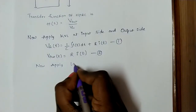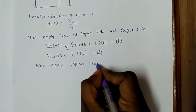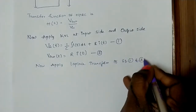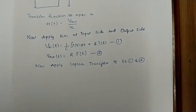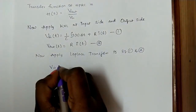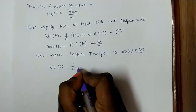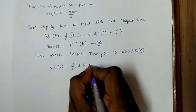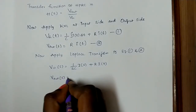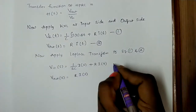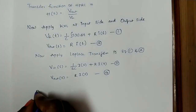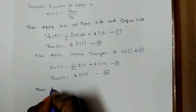Now apply the Laplace transform to both equation 1 and equation 2. After transformation, equation 3 becomes: V_input(s) = (1/sC)·I(s) + R·I(s), and equation 4 becomes: V_output(s) = R·I(s).